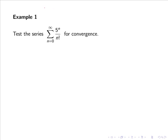So the ratio test states that we must calculate the limit as n goes to infinity of a_{n+1} divided by a_n.